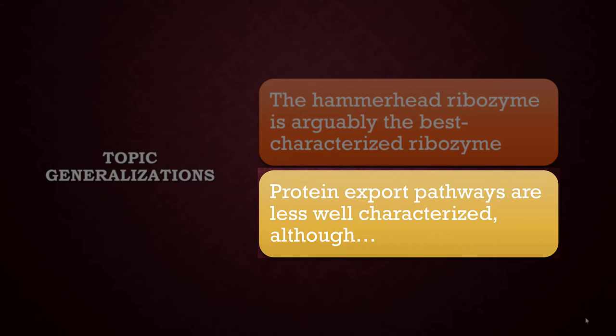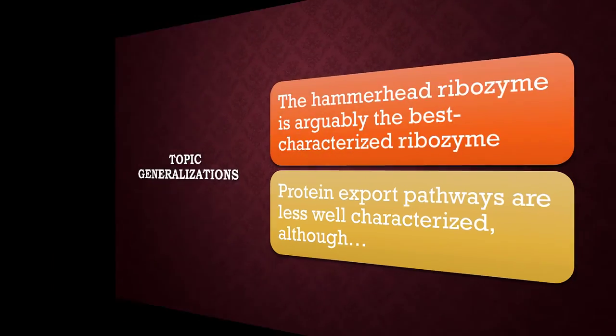Moving on to the second example, 'Protein export pathways are less well characterized, although...' In this example, by contrast, the author starts by acknowledging that not a lot is known about protein export pathways, but then most likely goes on to tell us what we do know about them.